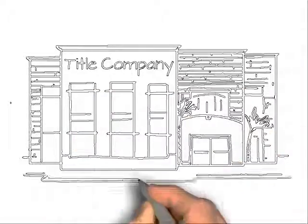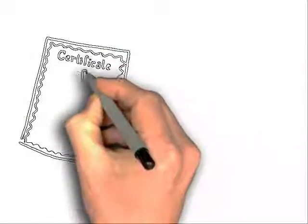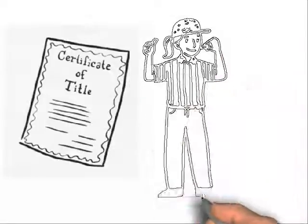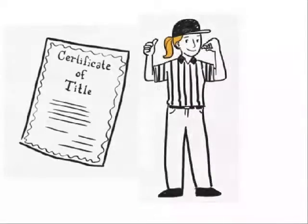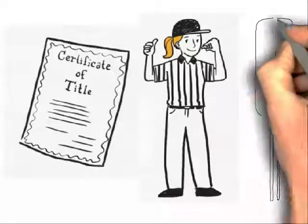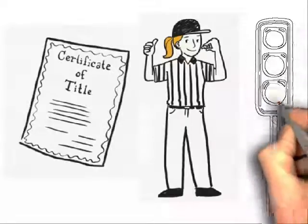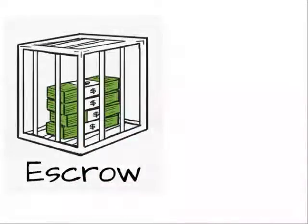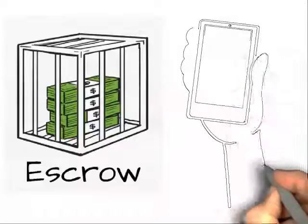Your realtor will send that earnest money to the title company. The title is the piece of paper that says who officially owns the house. You can think of the title company as the referee for the sale, making sure the home buying rules are being followed and you have the green light to make the sale official. They need to verify that earnest money is deposited in a special holding account called escrow before moving on.